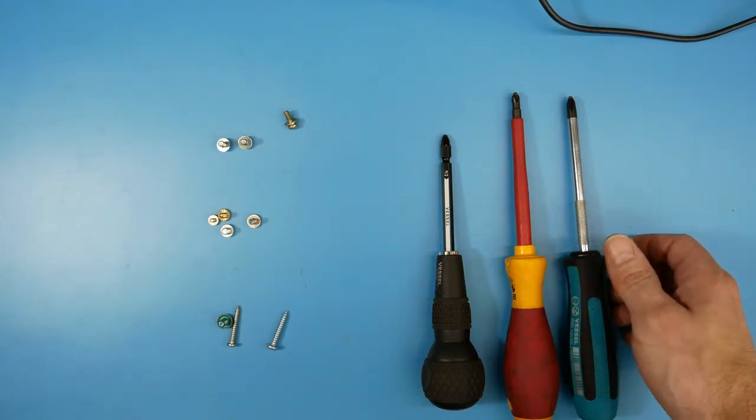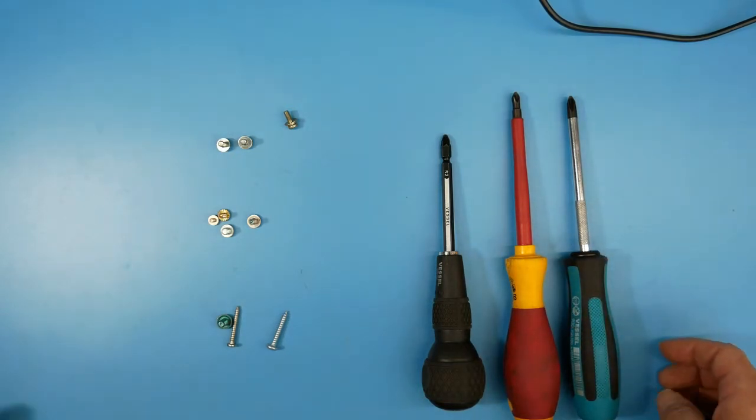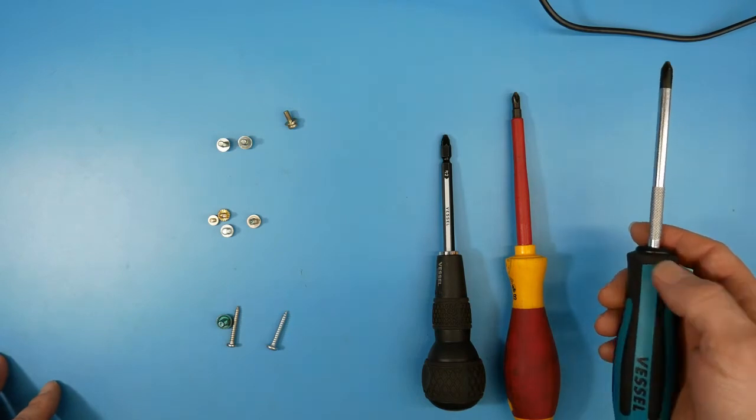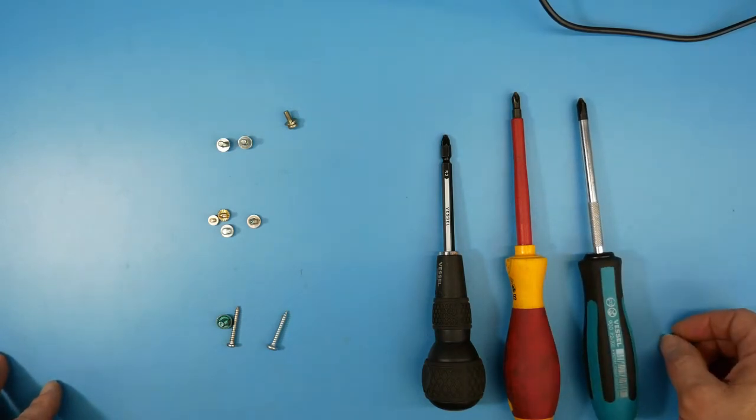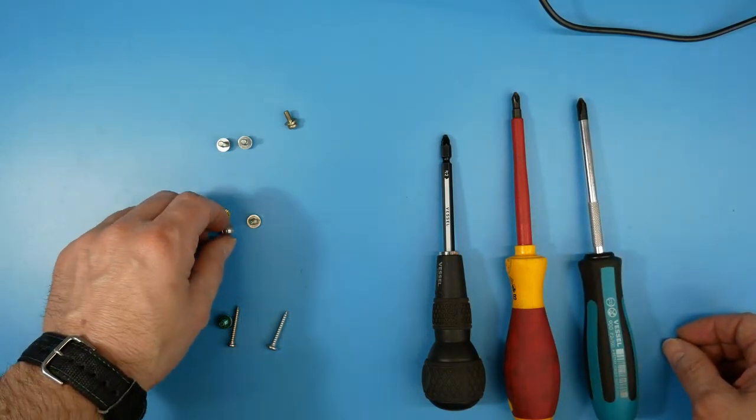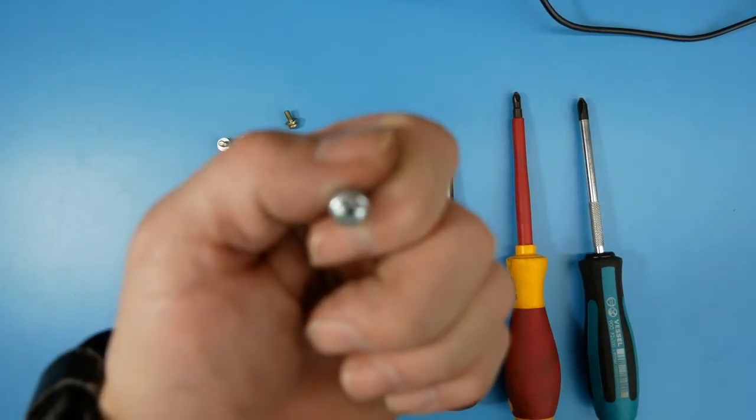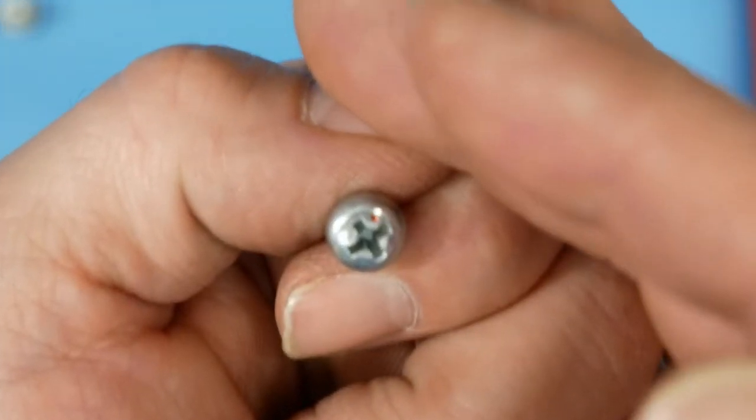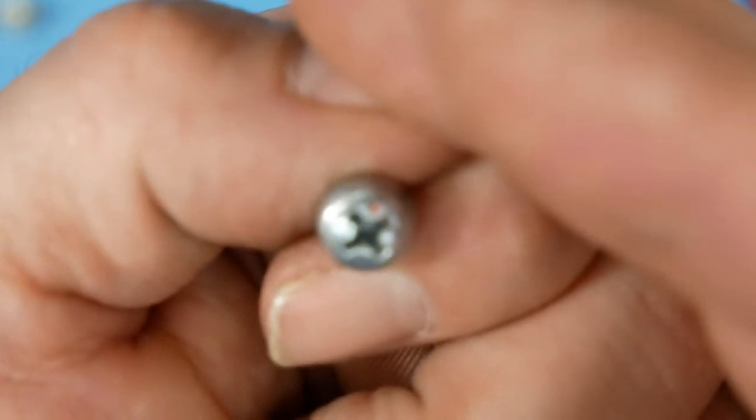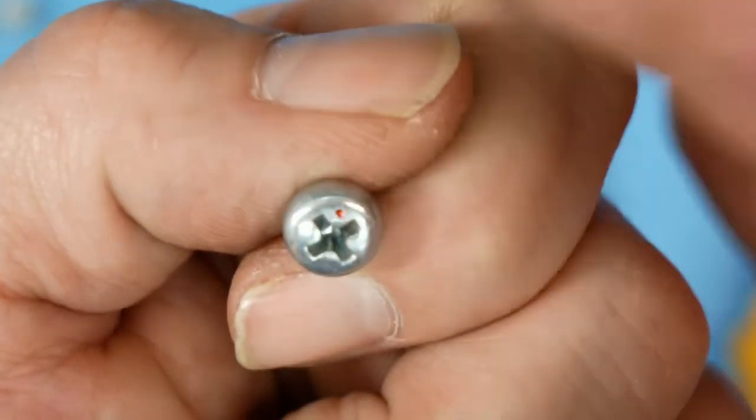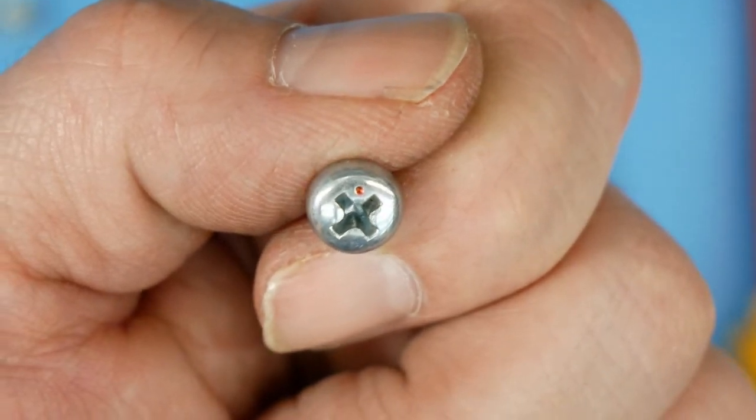And it turns out that's what it was, it was a JIS screw. Apparently most electronics or anything that's coming from Asia is using the JIS screw. JIS screws, see if I can get this to focus, I put a little dot right there, kind of highlighted it with some red.